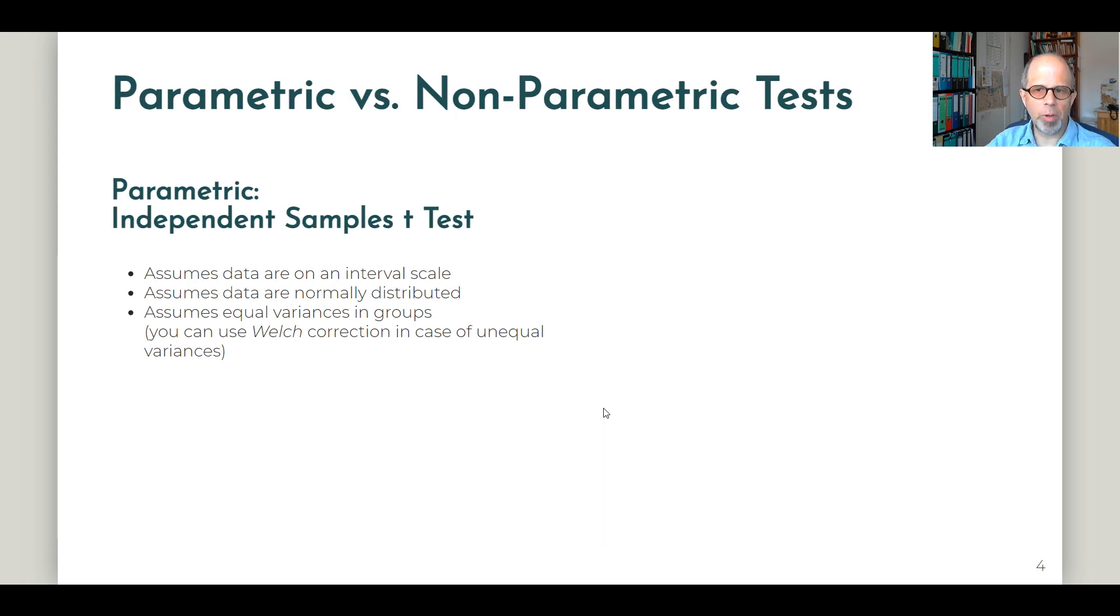Before we dive right into the data, a little bit of background about the two tests. The independent samples t-test is a parametric test. That means it makes a couple of assumptions about the data. The t-test assumes that the data are on an interval scale, assumes that the data are normally distributed, and assumes equal variances in the groups. These assumptions are debatable. Studies have shown that the t-test can react quite robustly to violations of the assumptions. It depends on the group sizes.